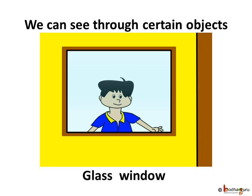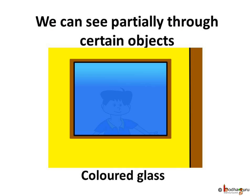We cannot see through certain materials, and we can see through certain materials. Is there something in between? Yes, let us take the case of a colored glass or dirty water. We can see through them but not clearly.